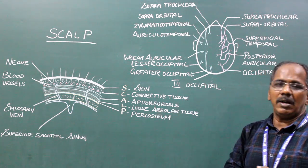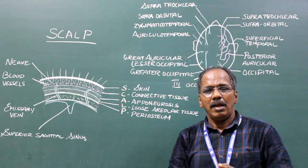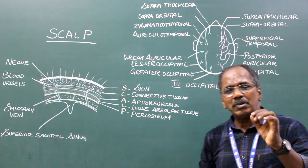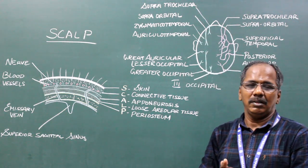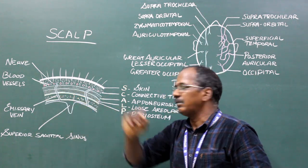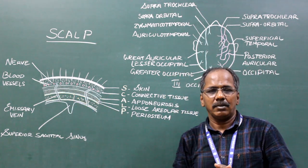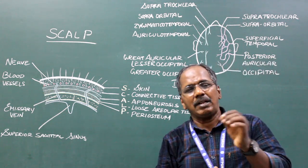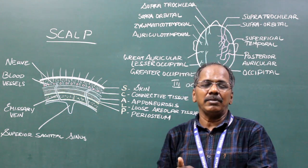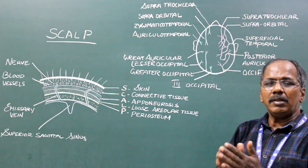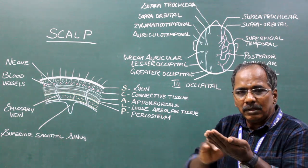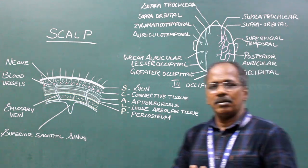Loose areolar tissue. As the name indicates, this layer is made up of loose areolar tissue which is traversed by emissary veins. Pericranium — it is the outer periosteal covering. It covers the surface of the bones of the vault. It is loosely attached to the surface of the bone and firmly attached to the sutural membranes.